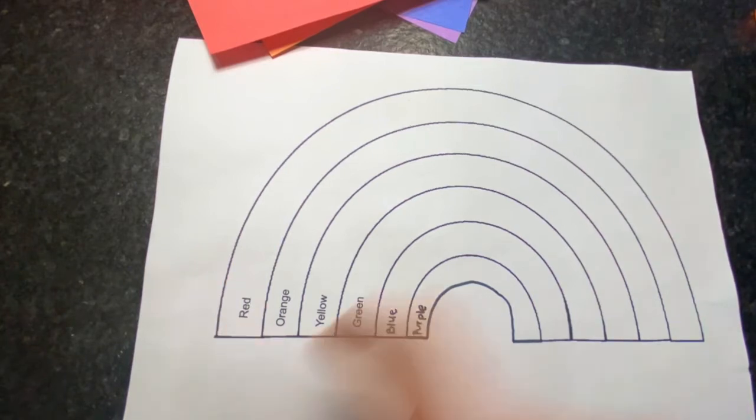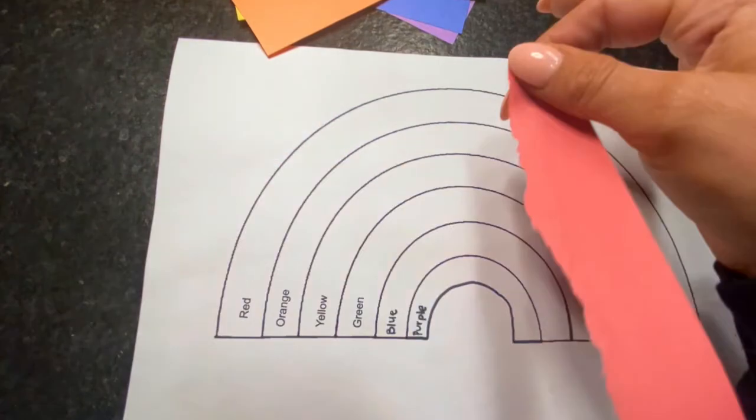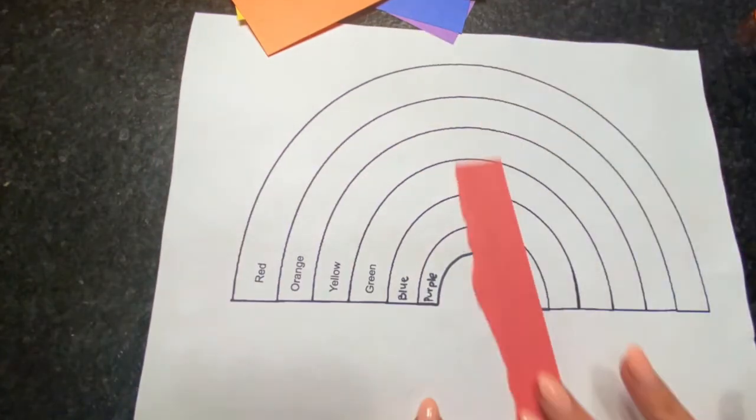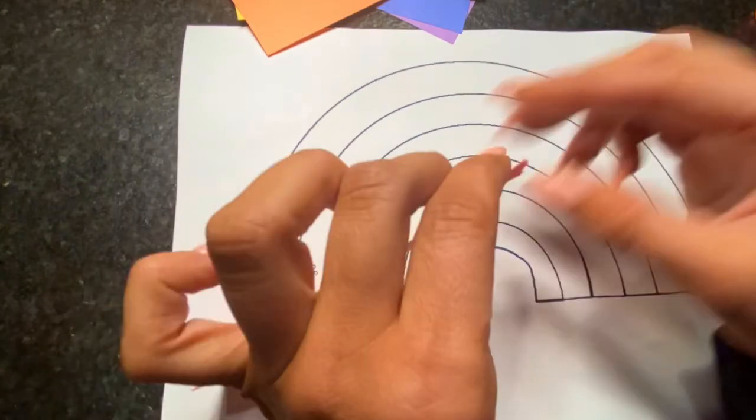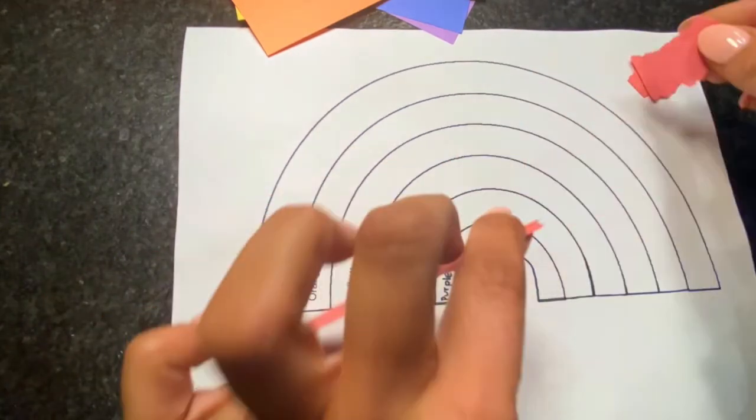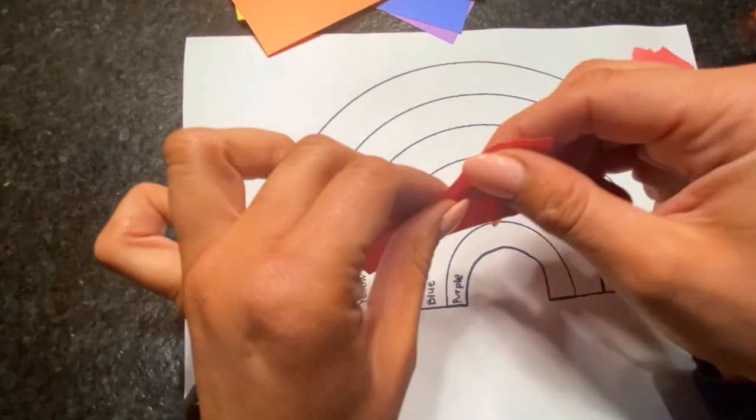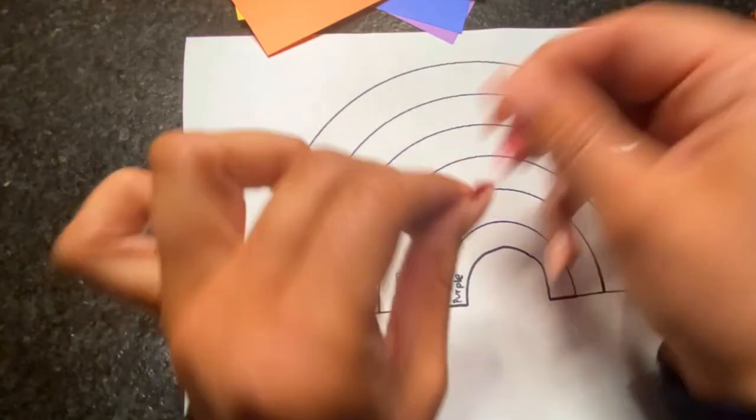The first color is red, so we're going to start with the red piece of paper. We're going to pinch it and then rip it into strips, and then even smaller pieces. We're going to rip until we have enough pieces to fill in the entire arch on top of our rainbow.